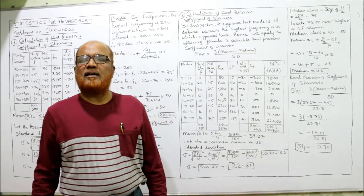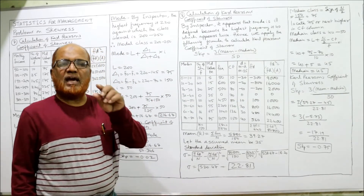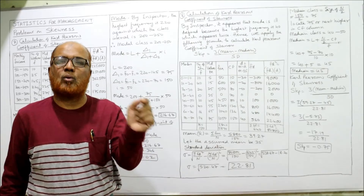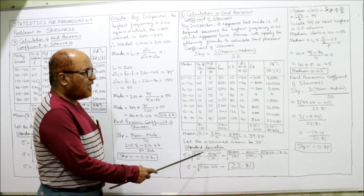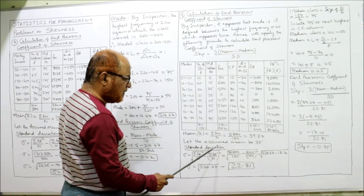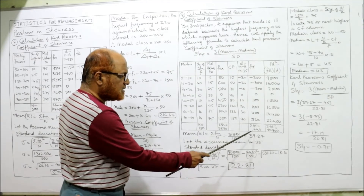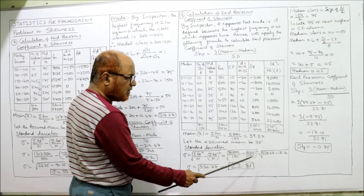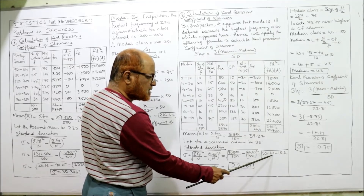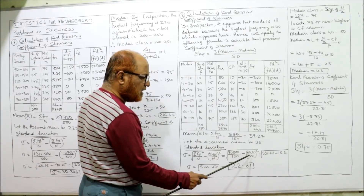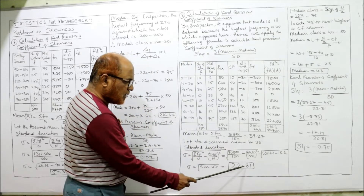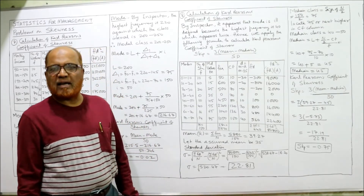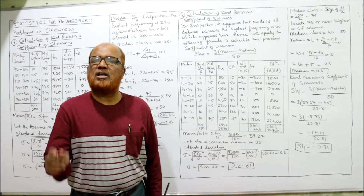Now we can calculate standard deviation. σ = √(ΣFD²/N − (ΣFD/N)²) = √(80800/150 − (640/150)²) = √(538.67 − 18.24) = √520.43 ≈ 22.81.